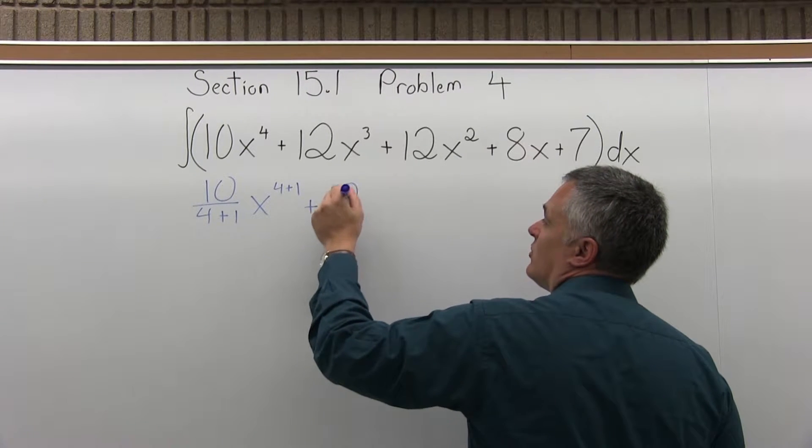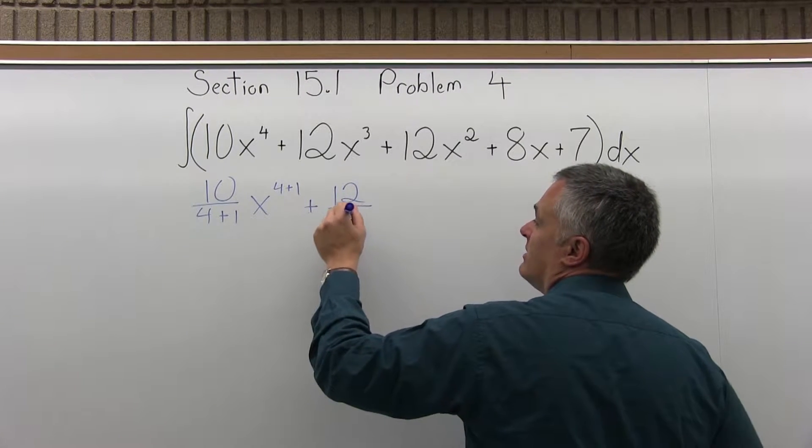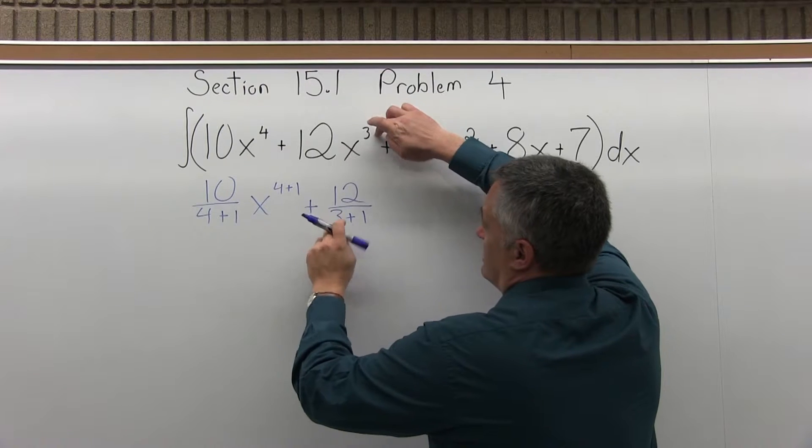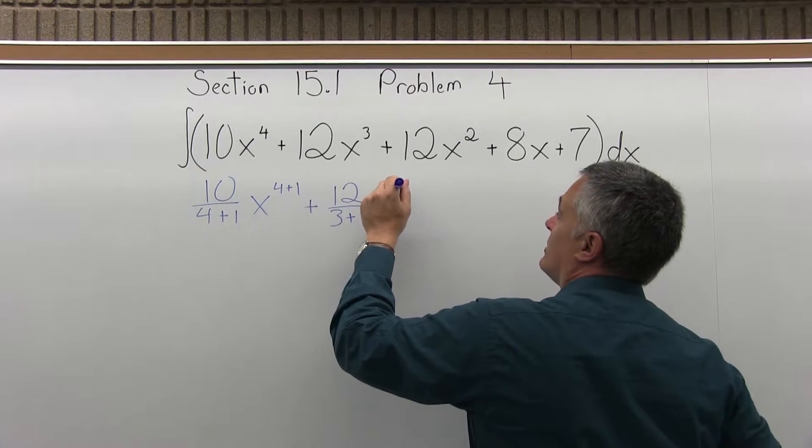Then the 12x cubed, you're going to go 12 over 3 plus 1, again the 3 from this 3 here, x to the 3 plus 1.